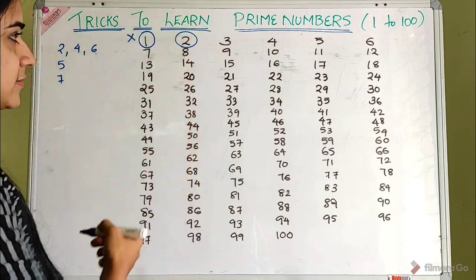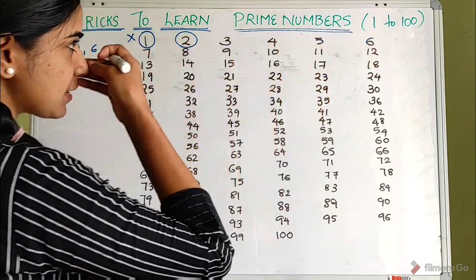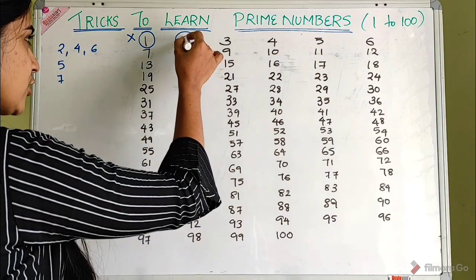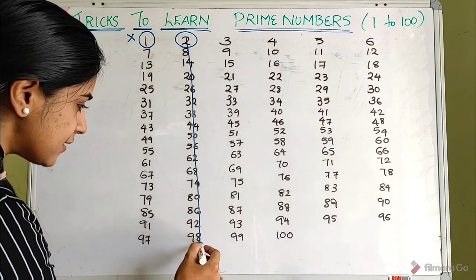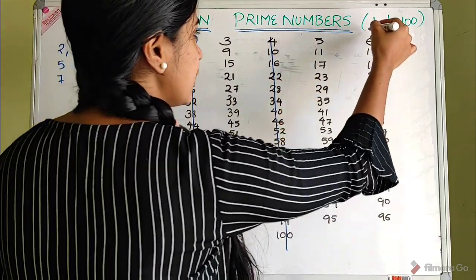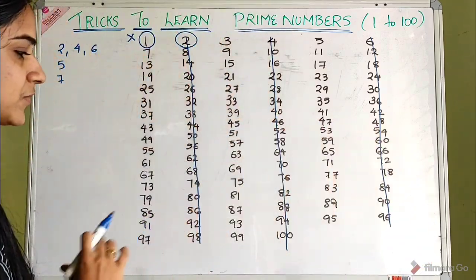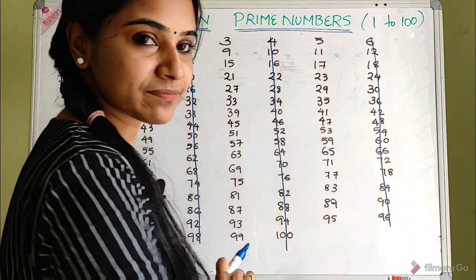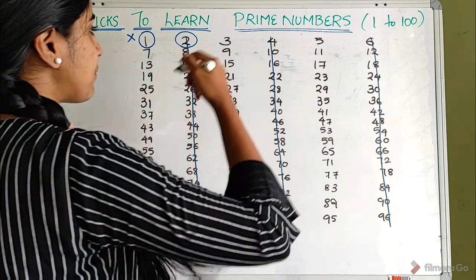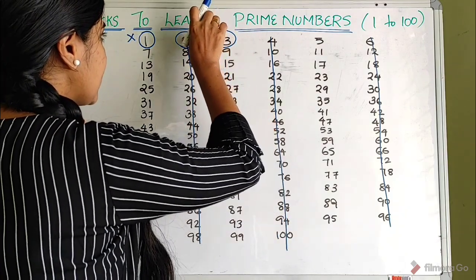2 is prime. 2 is the first multiple. So, starting from 4, 6 — we are going to cross out this column. We have to write 2 as Prime. Then the multiples of 2 — 4, 6, and so on — are deleted. We write 2 as Prime.